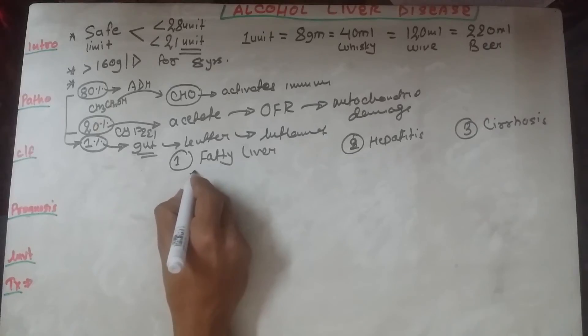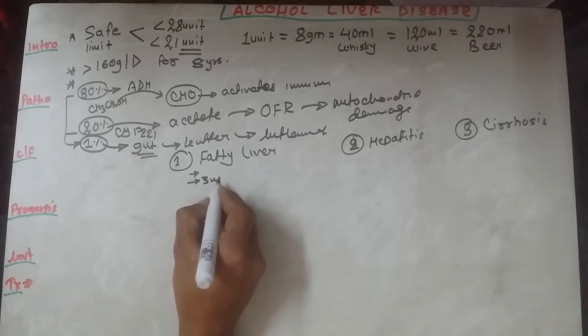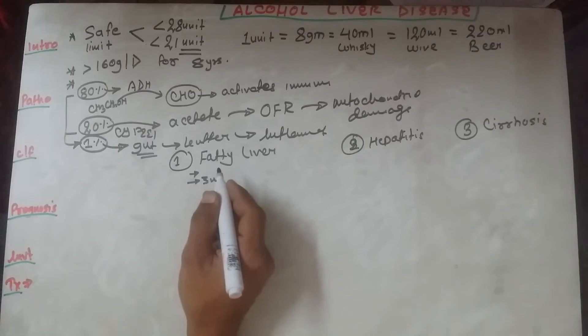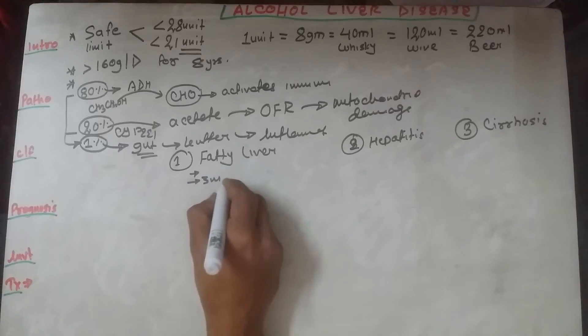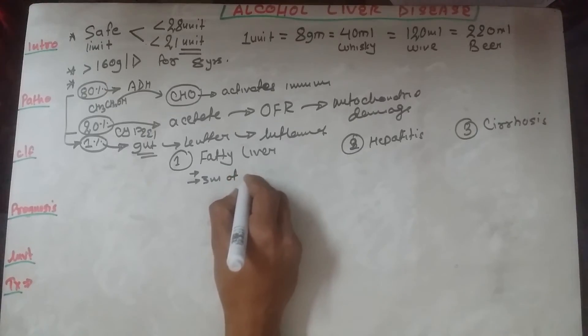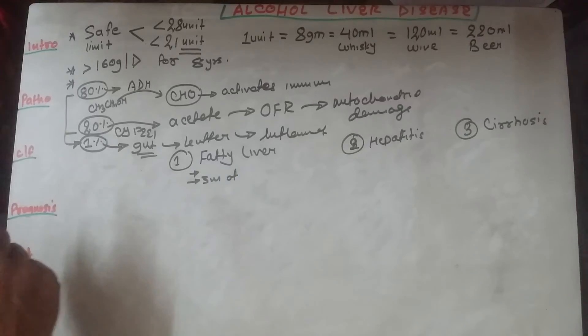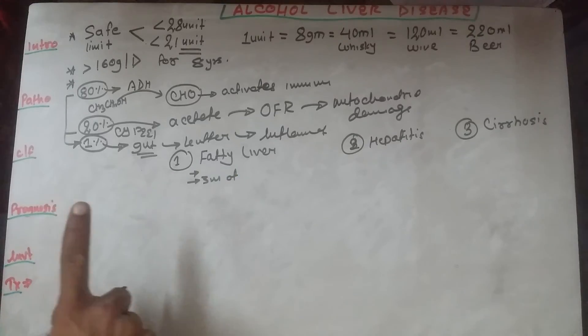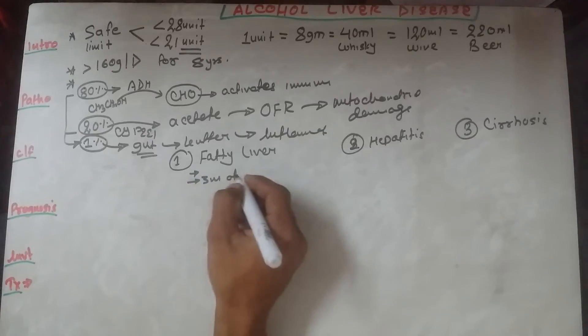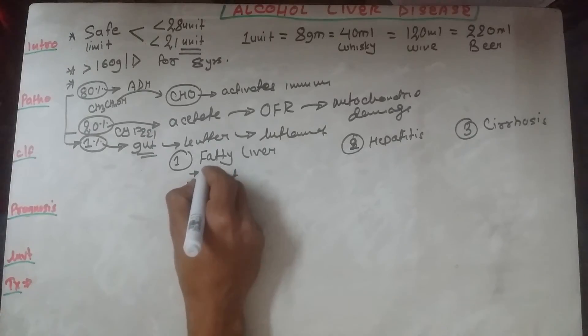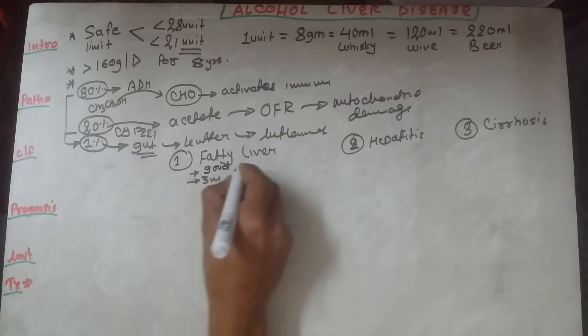The fatty liver has the best prognosis and usually resolves after three months. There is spontaneous resolution seen in this patient after three months of alcohol abstinence.